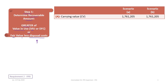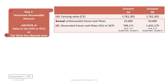ASPE does not deduct the disposal costs, but IFRS does. Under our two scenarios, our carrying value is the same and is calculated in the same way as under ASPE, where we had taken six years of accumulated depreciation under double declining balance. So $1,761,205 is the carrying value. Next is to determine the value in use, which we can denote as item B.